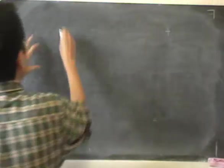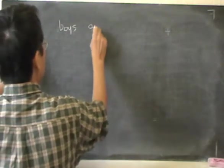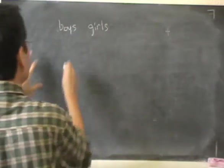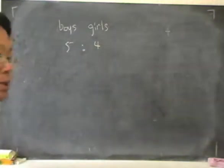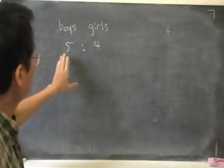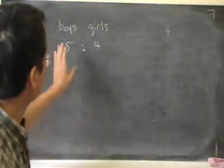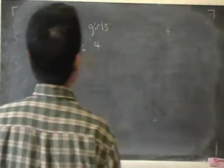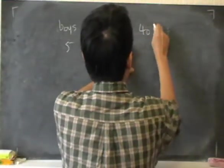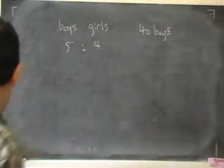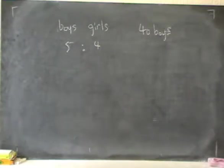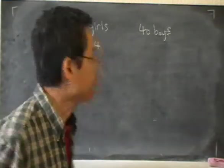Let's look at another question on ratio. In a certain class in the school, the ratio of the number of boys to the number of girls is 5 is to 4. Now given that there are 40 boys in this class. That's a lot of boys in the class. So what is the total number of children? That's the question.